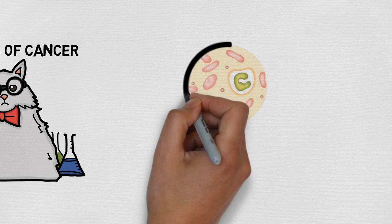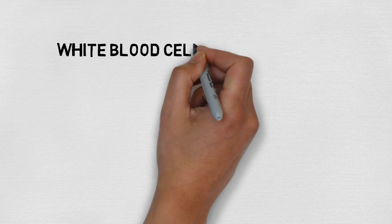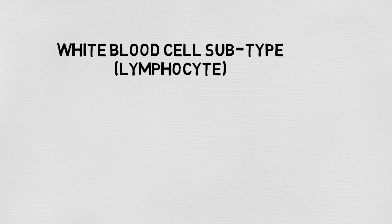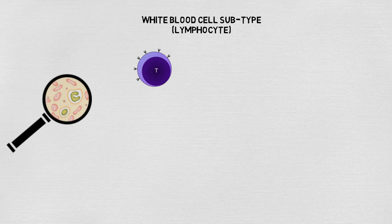The cells of our immune system are continuously monitoring our tissues. A major player in the immune response is a white blood cell subtype called a lymphocyte. The three major types of lymphocyte are T cells, B cells, and natural killer cells.